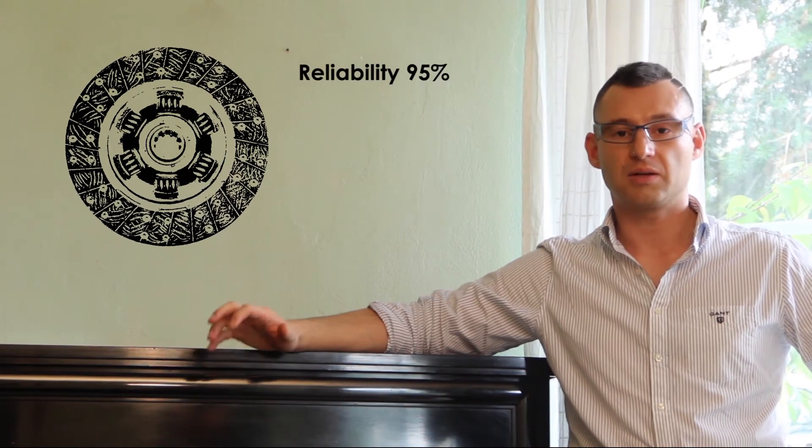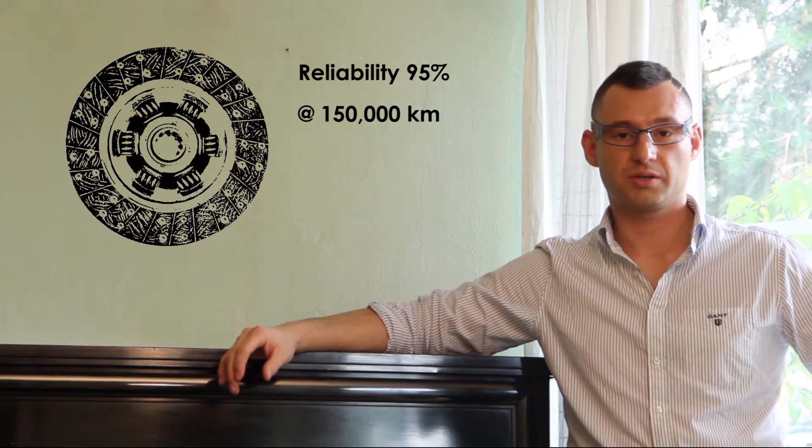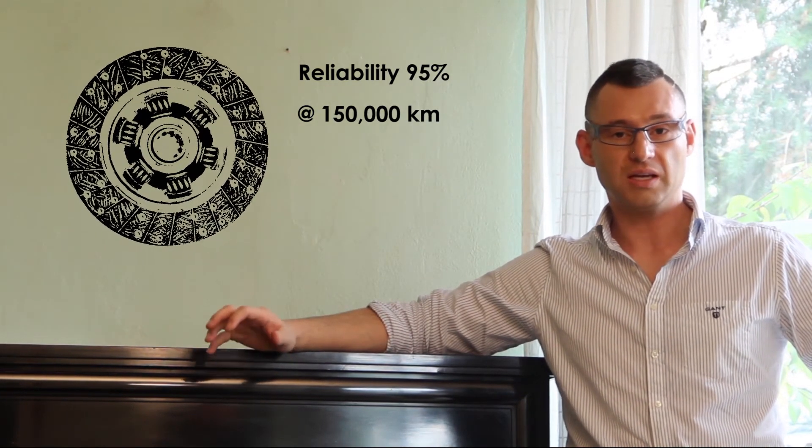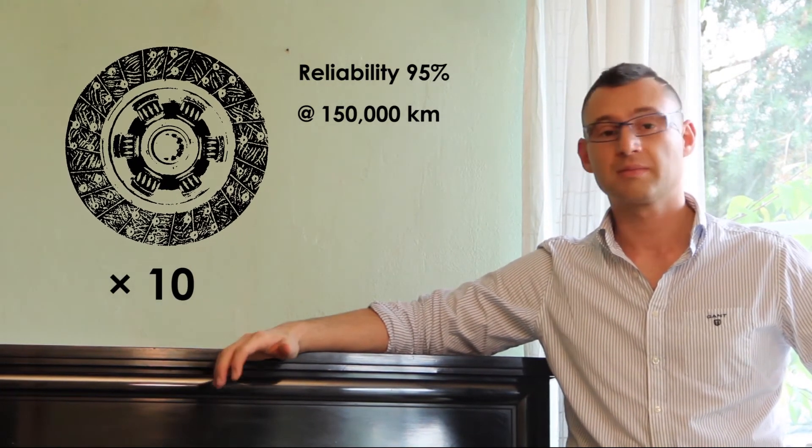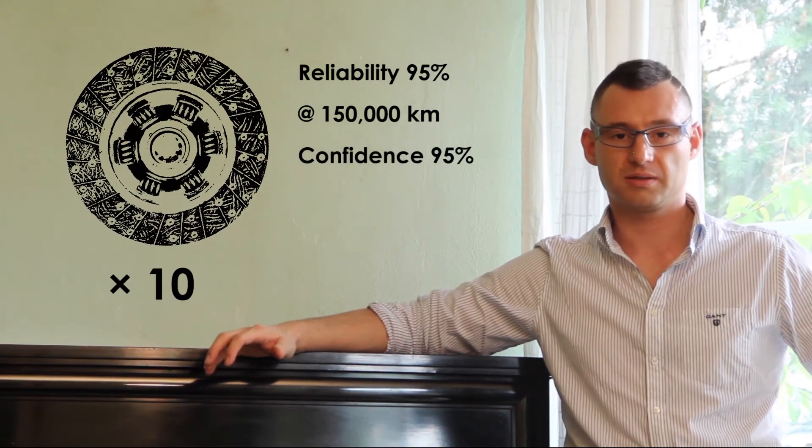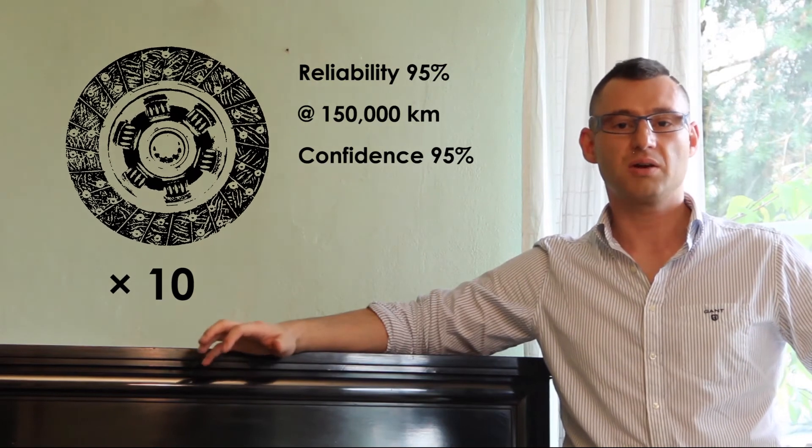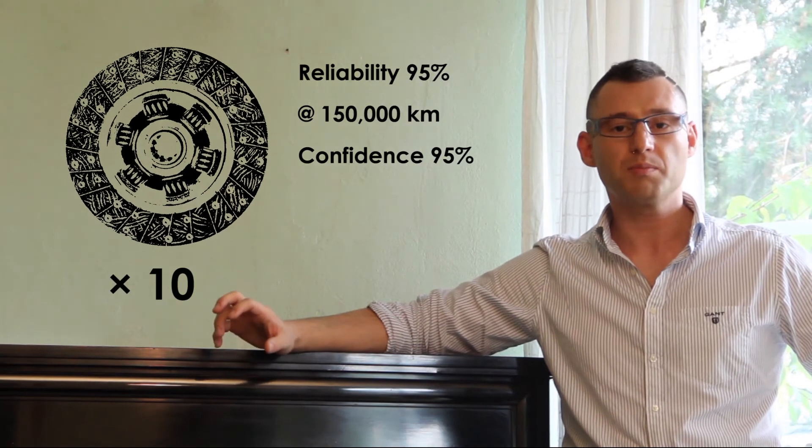Let's see an example, now for a manual transmission. A clutch plate with frictional segments shall be designed to 95% reliability at 150,000 km of typical customer usage. We need to decide how long to test if we have 10 parts available, and we want to be 95% confident about a positive test result. Based on an expectation of a wear failure, we estimate the Weibull shape to be 1.4.